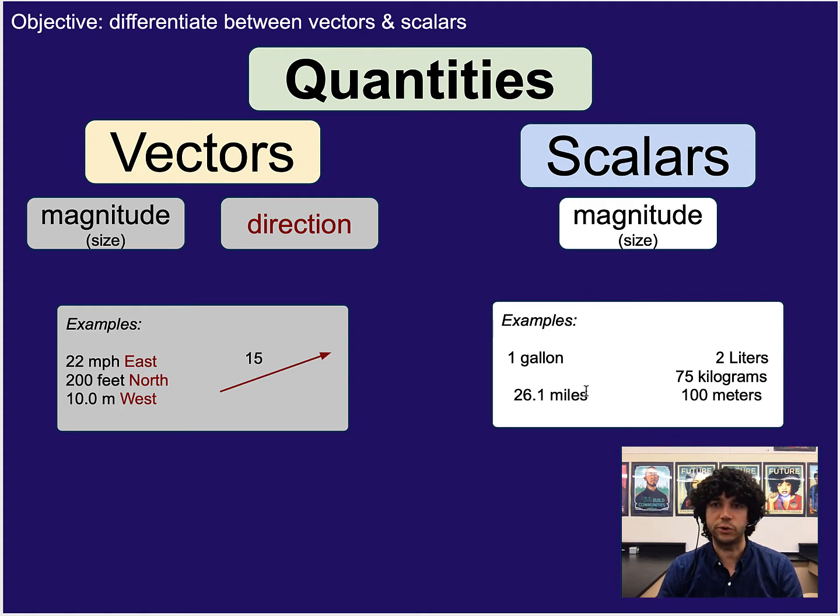So an example where we ignore direction might be something like 26.1 miles, where you are focusing on the length and don't really care if you ran in a circle or moved in a circle, or whether it was a straight line or some curvy path. It doesn't really matter. We're ignoring direction. An example where direction just doesn't really make sense would be measurement of volume. So you say like one gallon. If we had a gallon of milk, we don't really need to say the gallon of milk is directed up versus sideways or down or west or east. That doesn't really make sense.